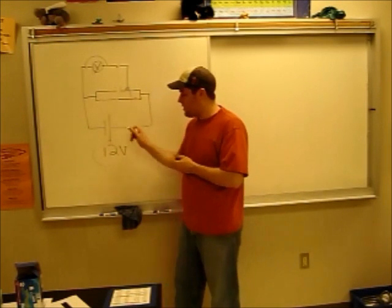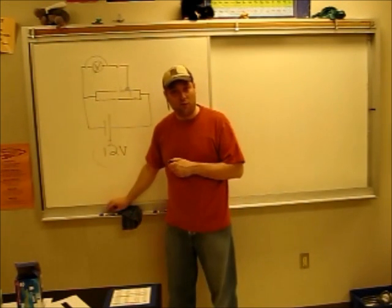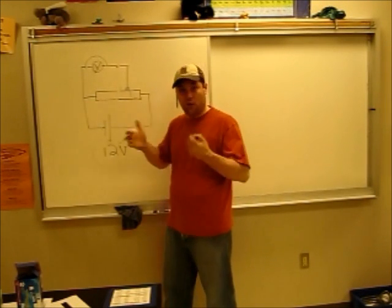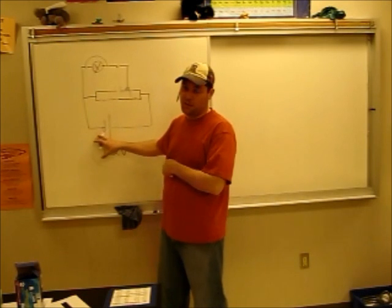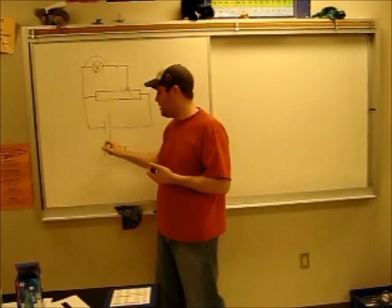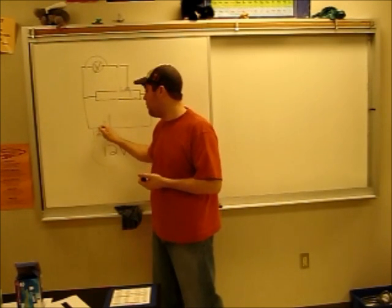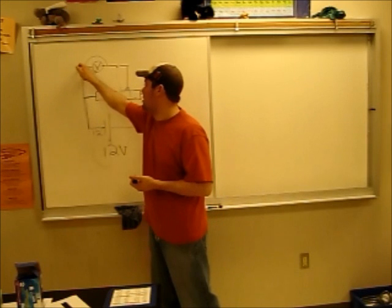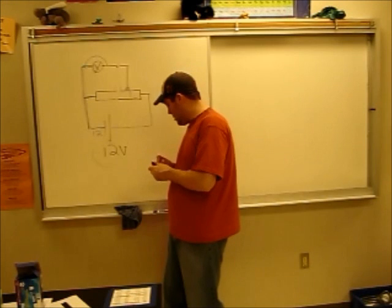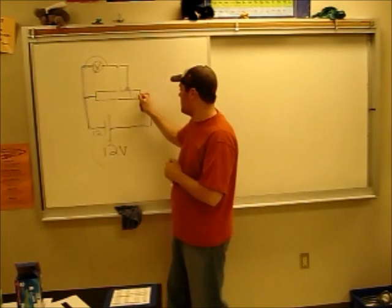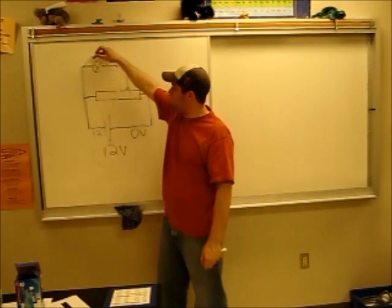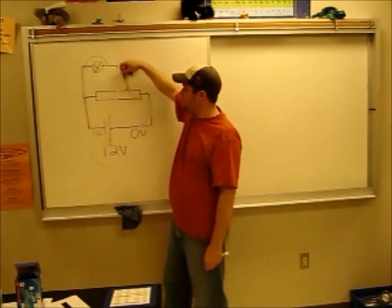Since the battery has a potential difference of 12 volts, from one side to the other it should drop 12 volts. If the electric potential at the beginning is 12 volts, it should drop to zero by the time it reaches the other side. How much it drops across the light bulb depends on where the slider is connected.